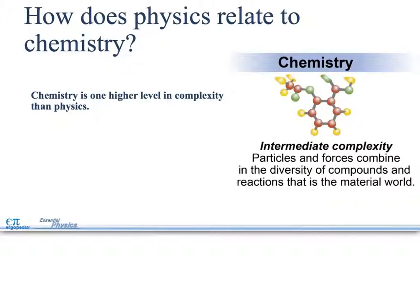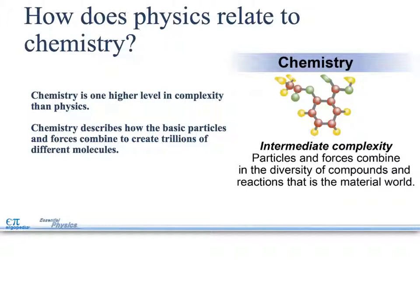How does physics relate to chemistry? Chemistry is one higher level in complexity than physics, so we're going to an intermediate complexity level. Particles and forces combine in the diversity of the compounds and reactions that is the material world. Chemistry uses physics to come together to create other atoms. The atoms come together to create molecules and compounds. Chemistry describes how the basic particles and forces combine to create trillions of different molecules.